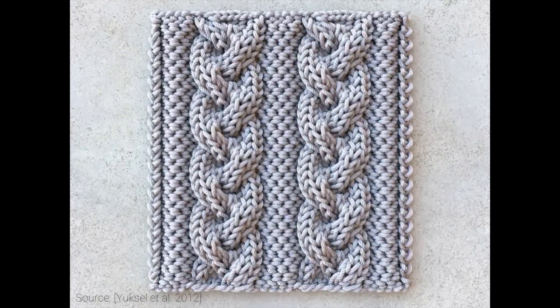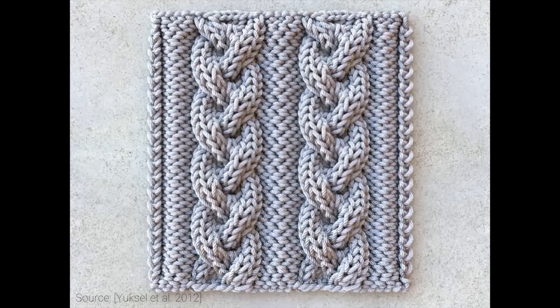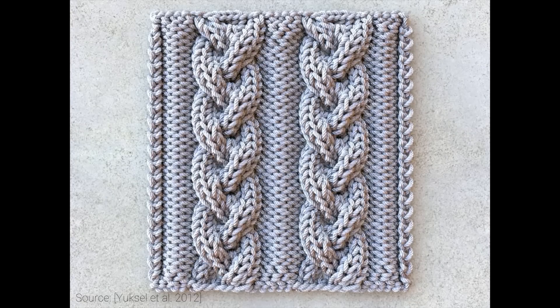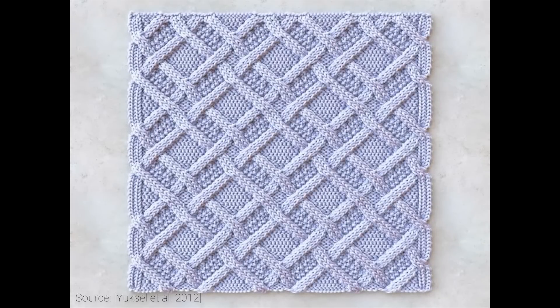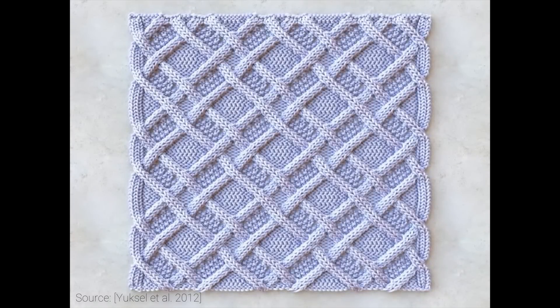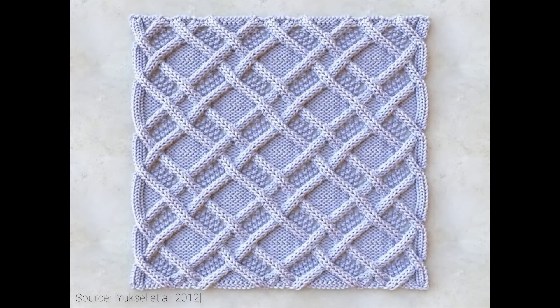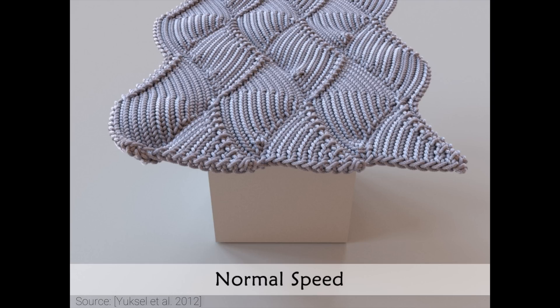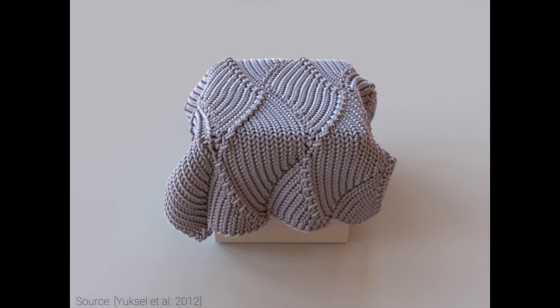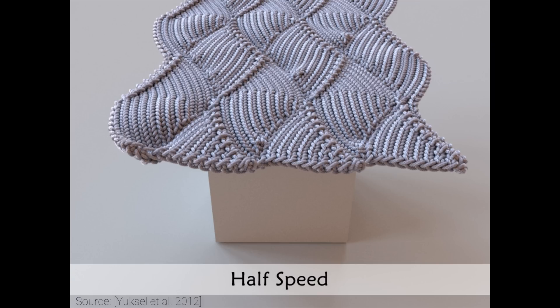We start out with dreaming up a piece of cloth geometry, and this simulator gradually transforms it into a real world version of that. This is a step that we call yarn-level relaxation. These final results look not only magnificent, but in a physical simulation, they also behave like real garments. It's such a joy to look at results like this.